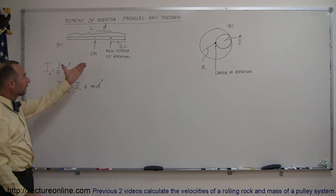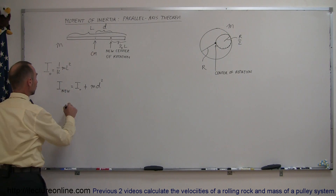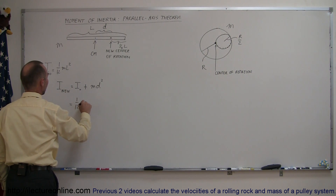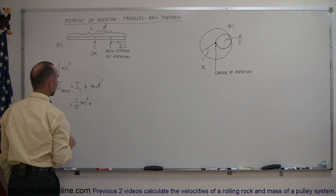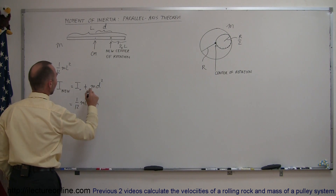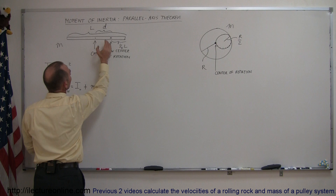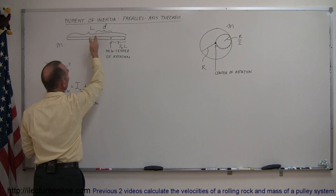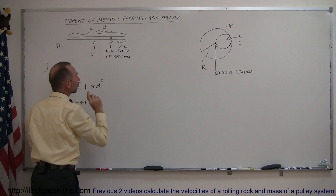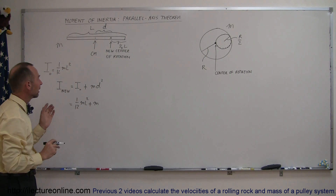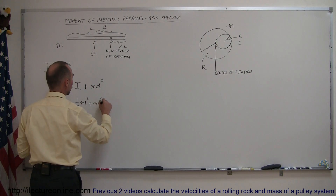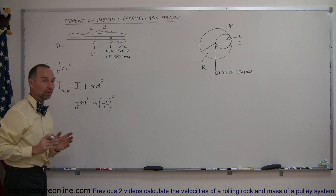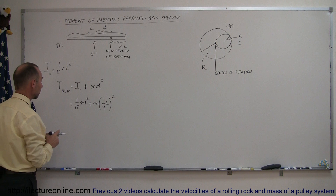Applying that to this particular example, this would be equal to the original moment of inertia, which is 1/12 mL squared, plus the mass of the object times the displacement squared. If this was indicated as 1/4 the length, then this will also be 1/4 the length — so we actually moved it 1/4 the length of the bar, so it would be 1/4 times the length, squared. And that would be the new moment of inertia of this object.